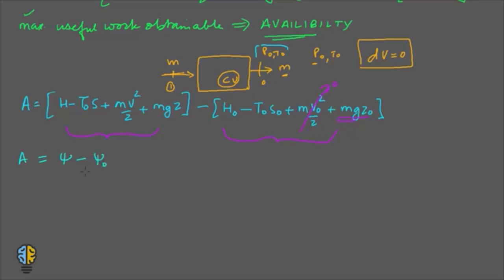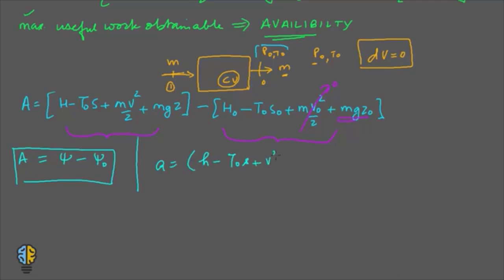This becomes A = ψ - ψ0. This is the formula to remember, where ψ is the availability function for a steady flow system. For per unit mass availability, it becomes: a = (h - T0*s + v²/2 + g*z) - (h0 - T0*s0 + g*z0), since v0 = 0.